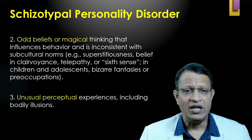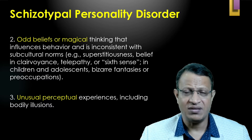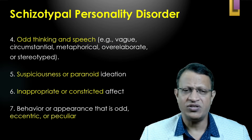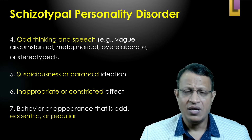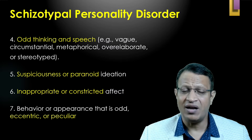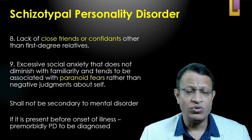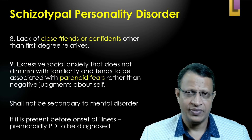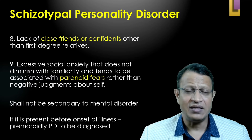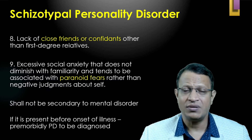Second, odd beliefs or magical thinking that influences behavior and is inconsistent with subcultural norms. Third, unusual perceptual experiences including bodily illusions. Fourth, odd thinking and speech — vague, circumstantial, metaphorical, over-elaborate, and stereotyped. Fifth, suspiciousness or paranoid ideation. Sixth, inappropriate or constricted affect. Seventh, behavior or appearance that is odd, eccentric, and peculiar. Eighth, lack of close friends and confiding relationships. Ninth, excessive social anxiety that does not diminish with familiarity and tends to be associated with paranoid fear rather than negative judgment about self.